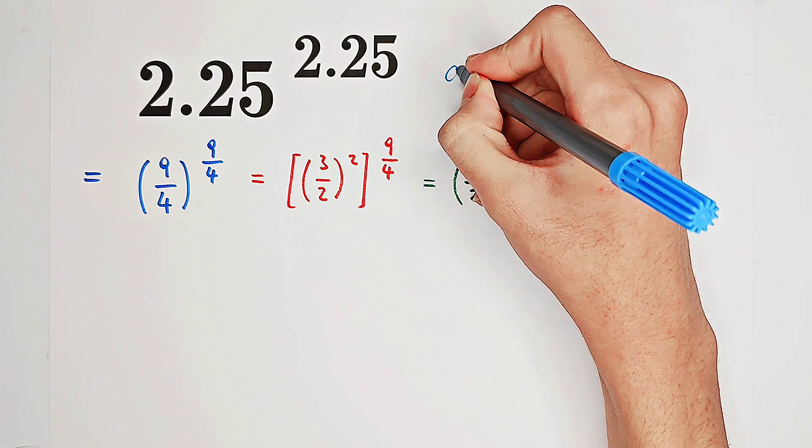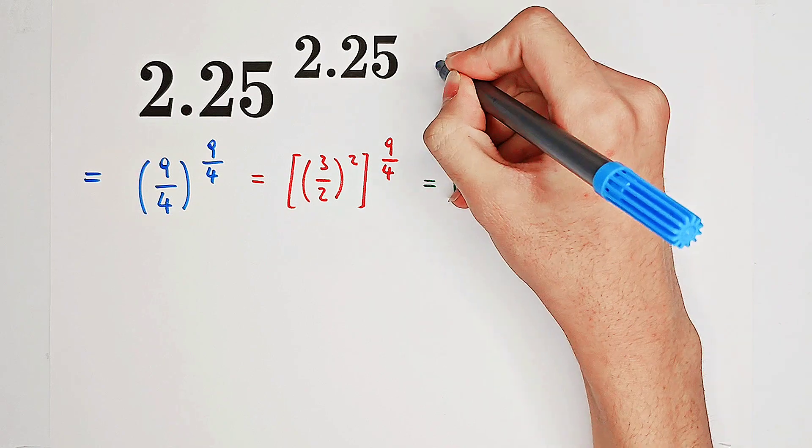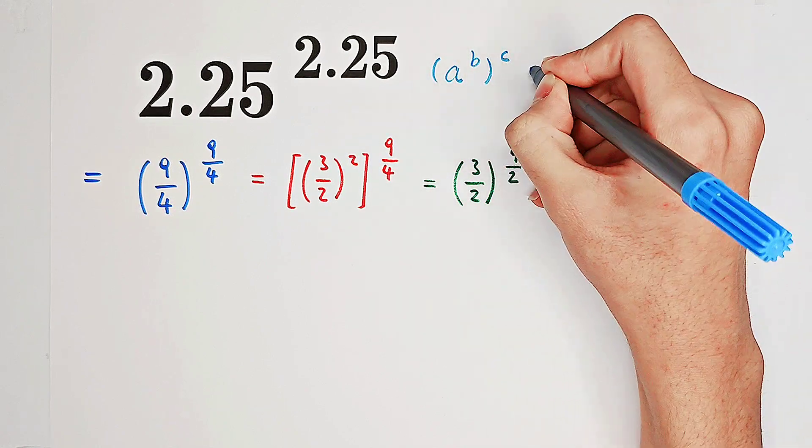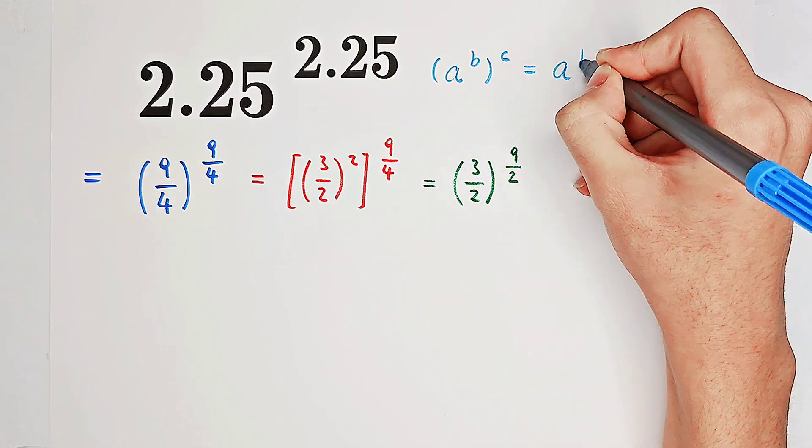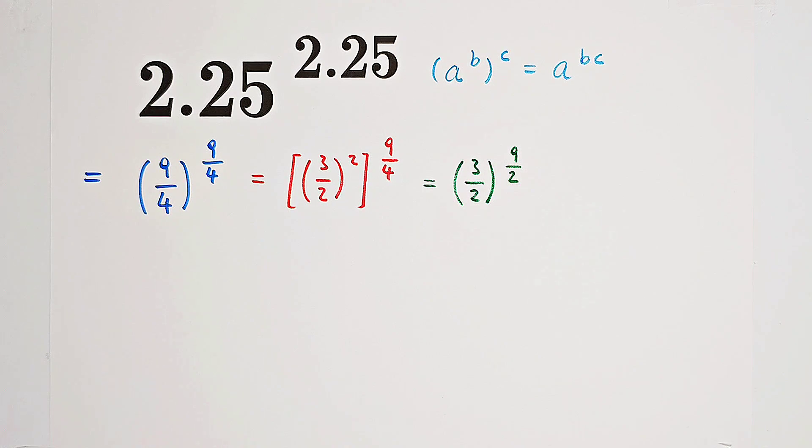Just remember the formula: a to the power of b then all to the power of c equals a to the power of b times c. If you can understand this formula, this step is easy.